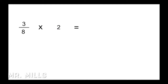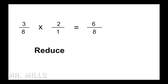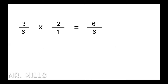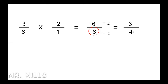Now we're going to multiplication: 3 eighths times 2. When dealing with multiplication, remember that a whole number is still a fraction — we can write 2 as 2 over 1. Then we simply multiply straight across: 3 times 2 is 6, and 8 times 1 is 8, giving us 6 eighths. We reduce: 6 divided by 2 is 3, and 8 divided by 2 is 4. So 3 quarters — odd on top, no further reduction.